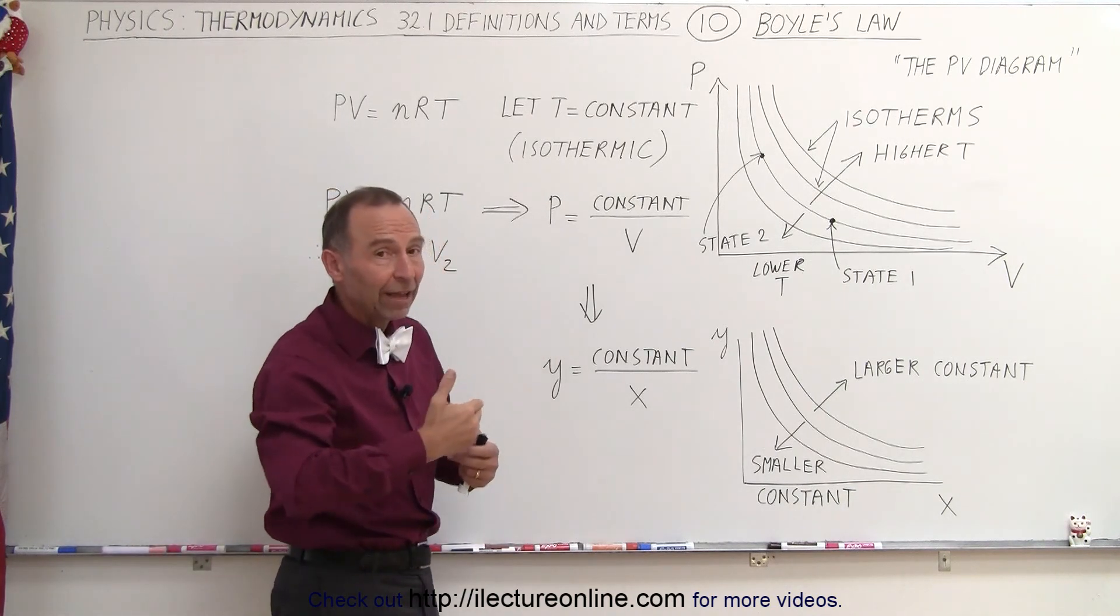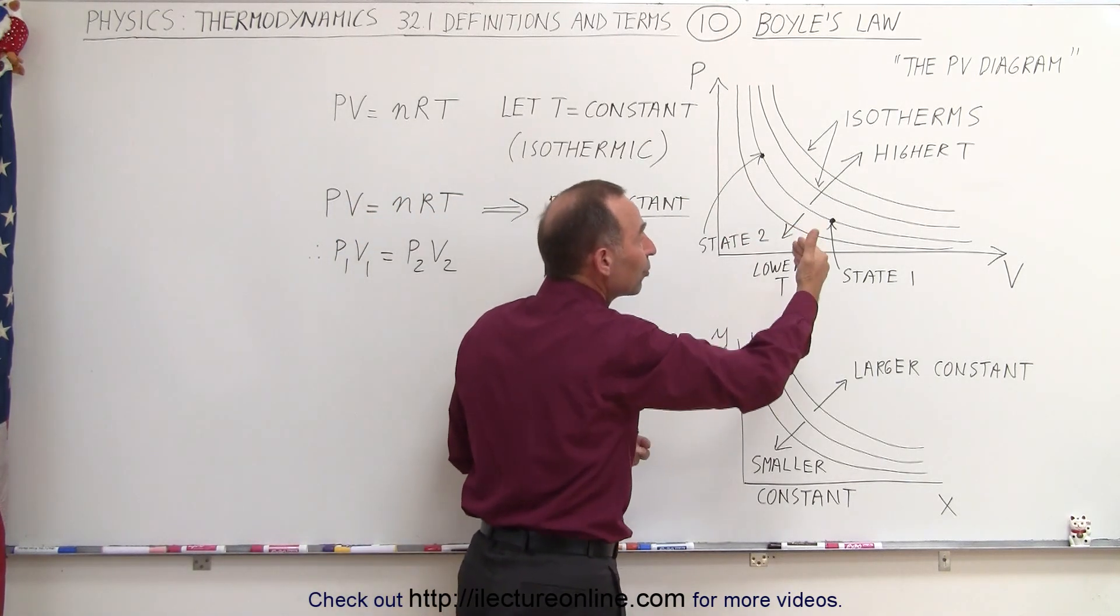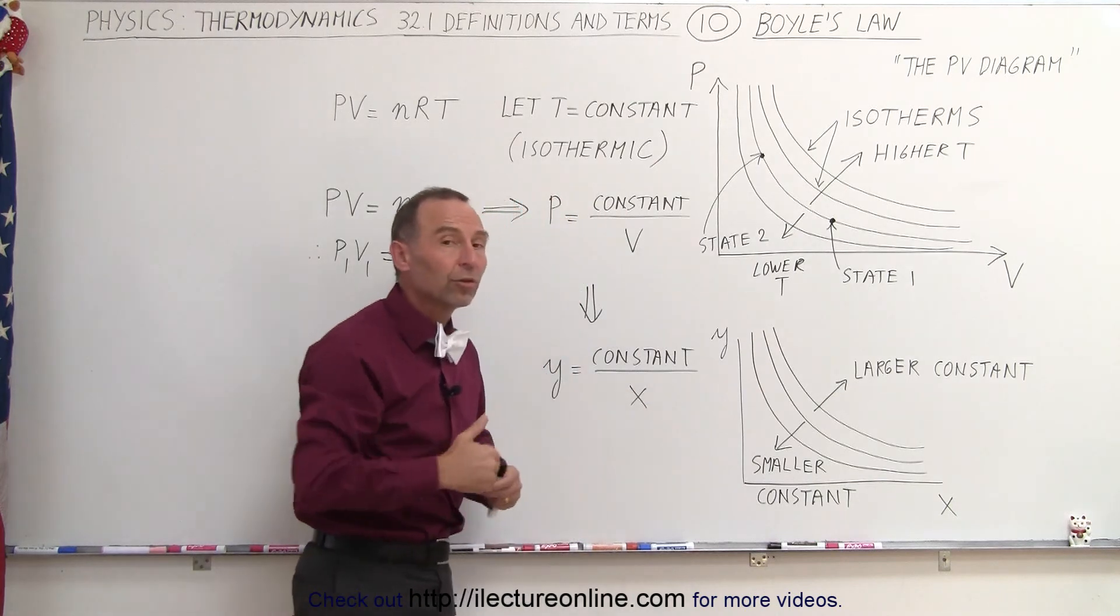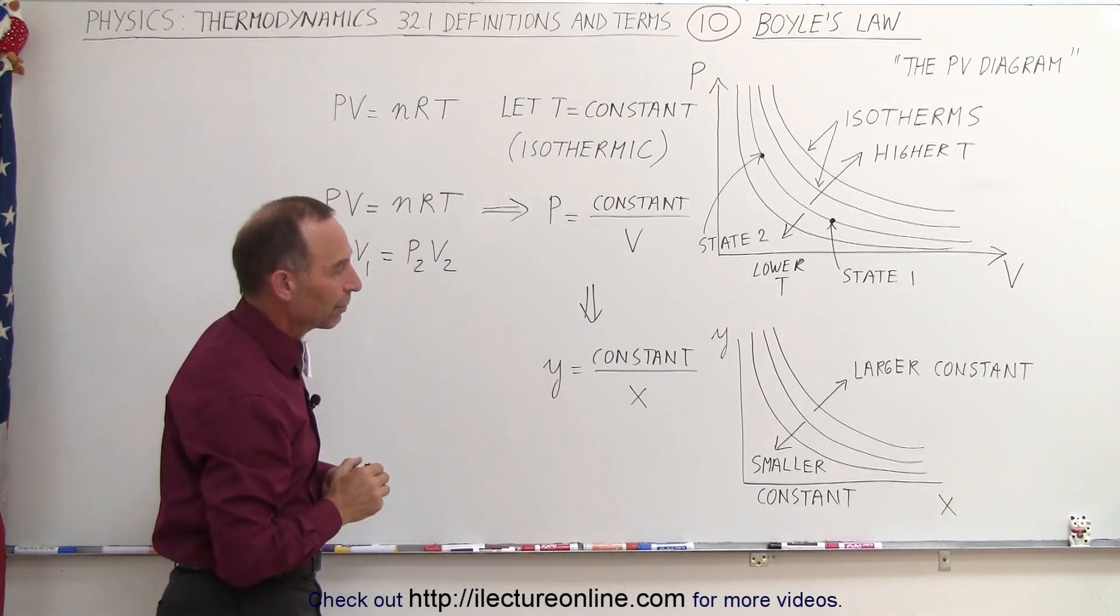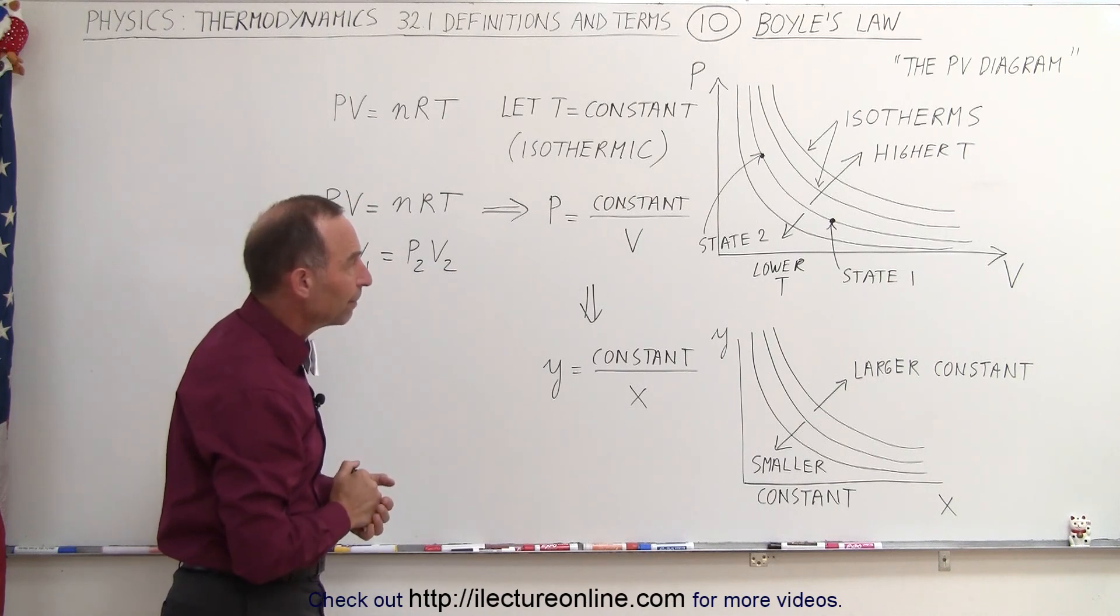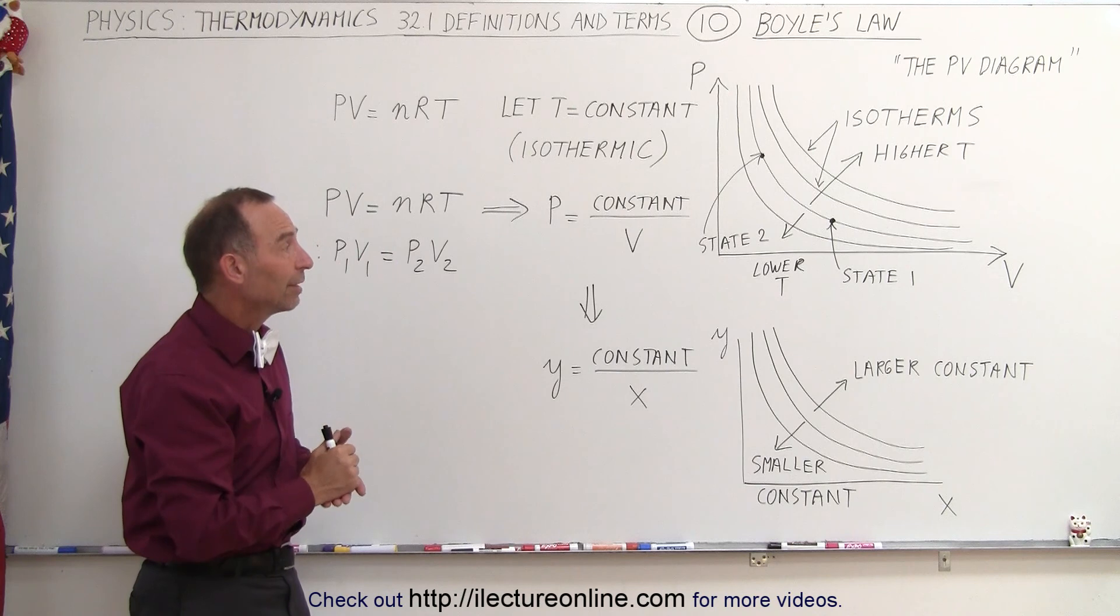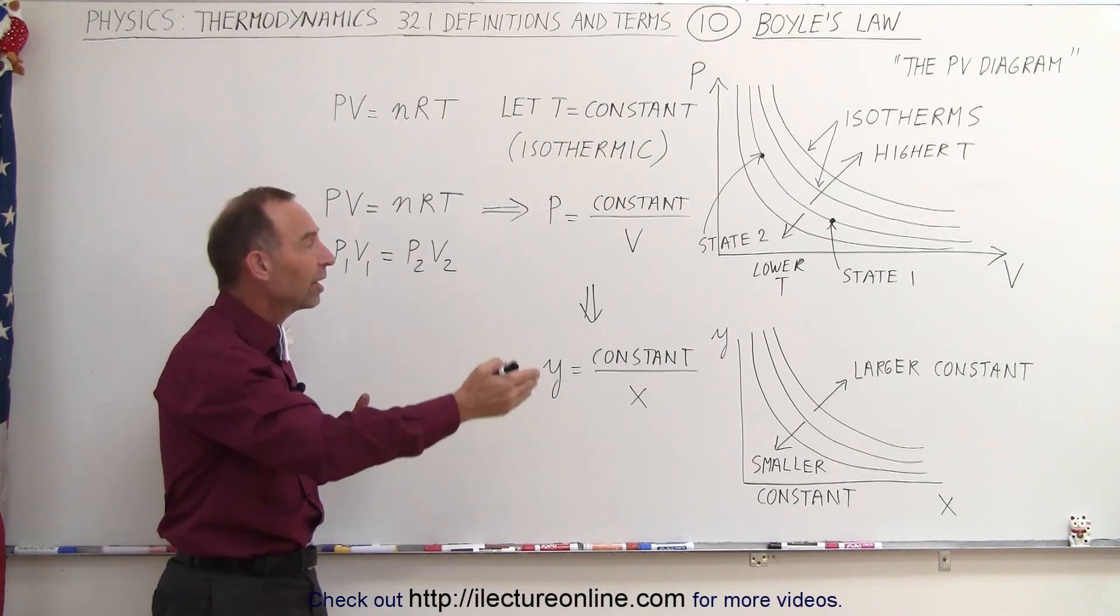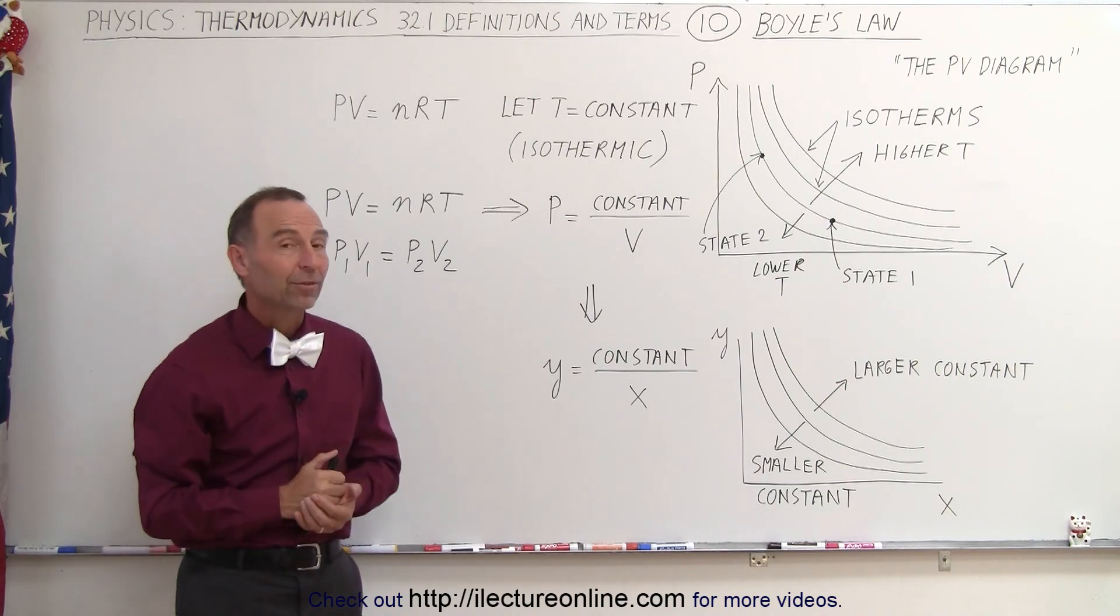Why do we have to have different isotherms? It's because we can have a different temperature that remains constant going from state one to state two, and therefore we have to have different representations on the PV diagram. That's where that came from, and hopefully that will help us understand later when we start working with different processes and how we then go from one state to another keeping the temperature constant. That's how it's done.